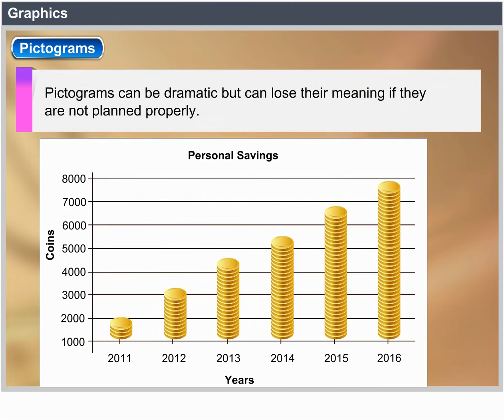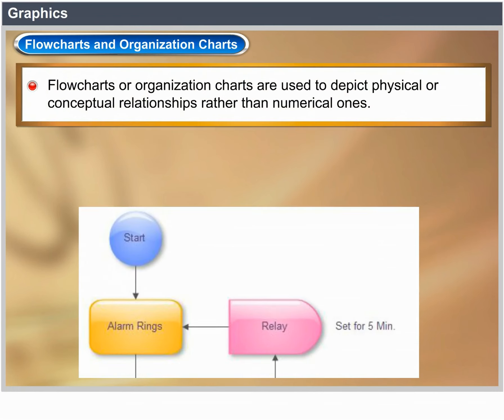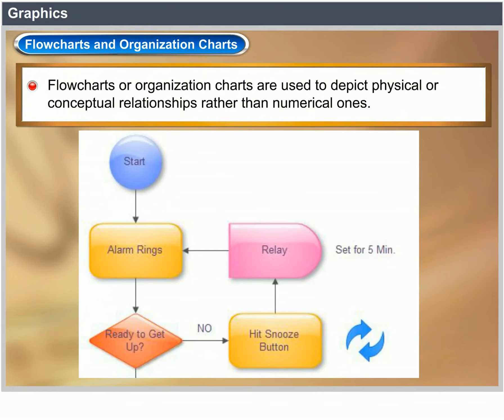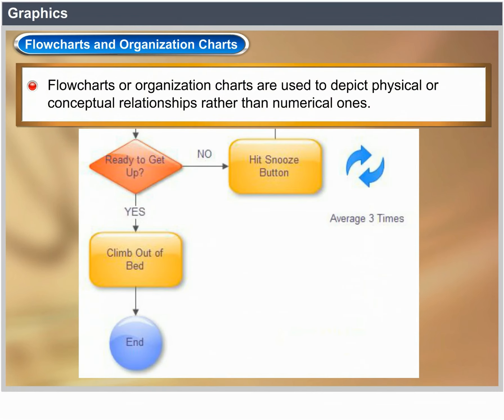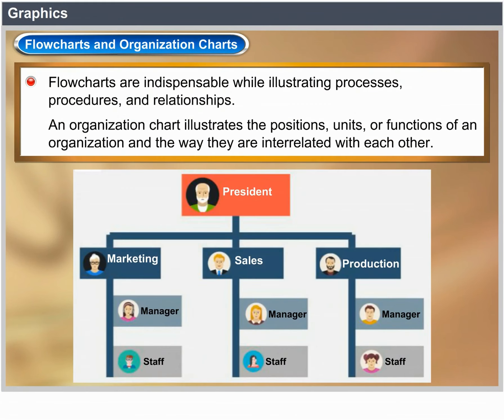Flow charts and organization charts are used to depict physical or conceptual relationships rather than numerical ones. Flow charts are indispensable when illustrating processes, procedures and relationships. An organization chart illustrates the positions, units or functions of an organization and the way they are interrelated.